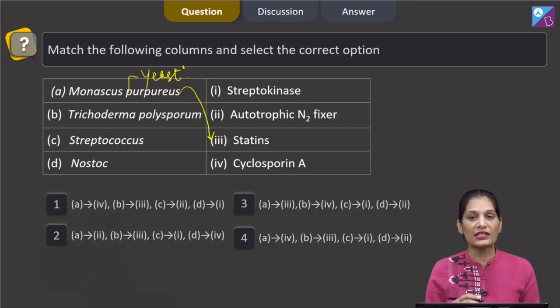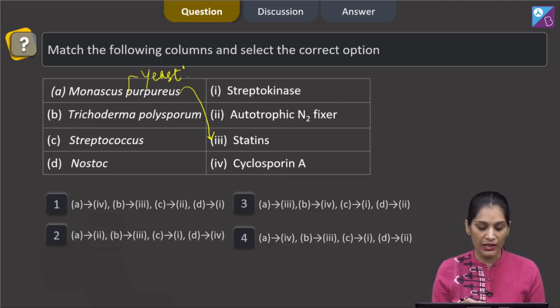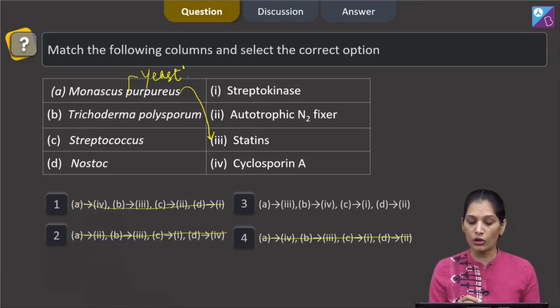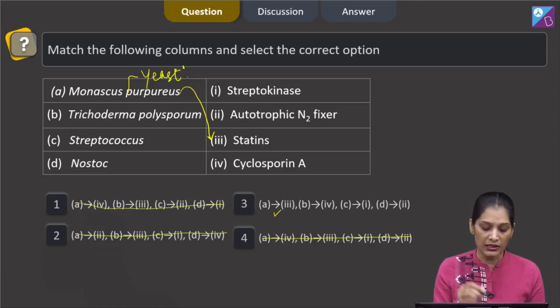What are statins? Statins are the blood cholesterol lowering agents. So here we can see A matches with third, and if A matches with third, all the other options are ruled out as only in the third option A is matching with third.